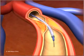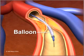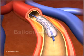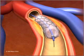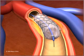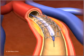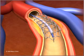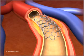When it reaches the narrowed area, a small balloon on its tip is inflated to reopen the artery and flatten the blockage into the artery wall, while at the same time stretching the artery open to increase blood flow to the heart. Both catheters and the wire are then withdrawn.